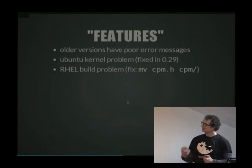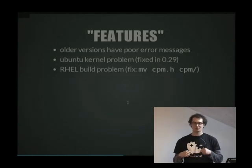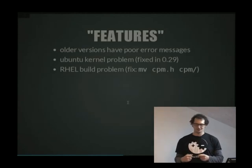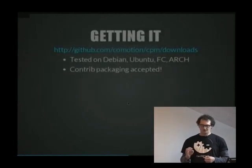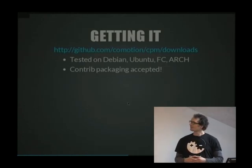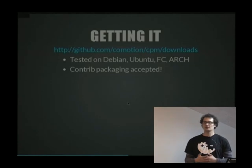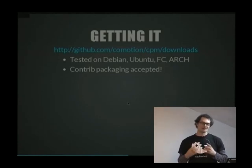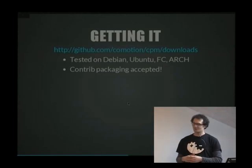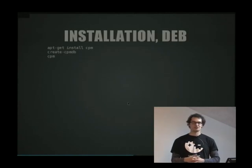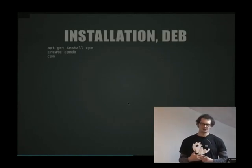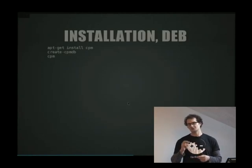In newer Ubuntu kernels there was a protection against ptrace that caused issues — fixed in CPM 0.29. There's also a Red Hat build problem that's easily fixed. To get CPM, go to github.com/comotion/CPM. It's been tested on Debian, Ubuntu, Fedora Core, and Arch Linux. Community-contributed packages exist for Arch and Fedora Core. Installing on Debian is just apt-get install CPM from testing onwards; there's a compatibility package for Wheezy on the CPM wiki on GitHub.